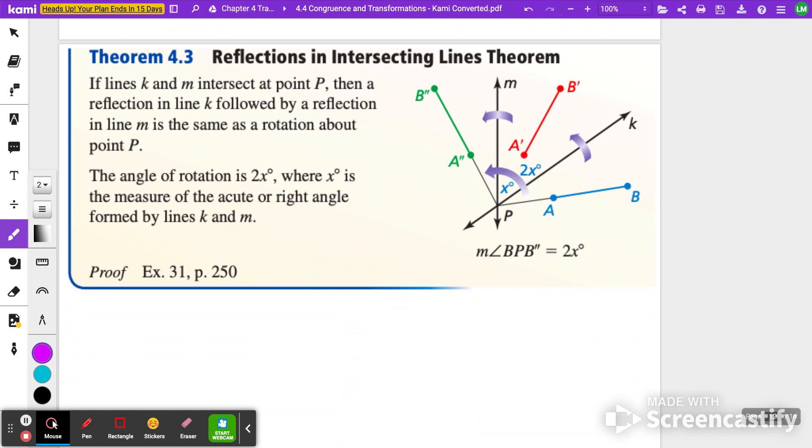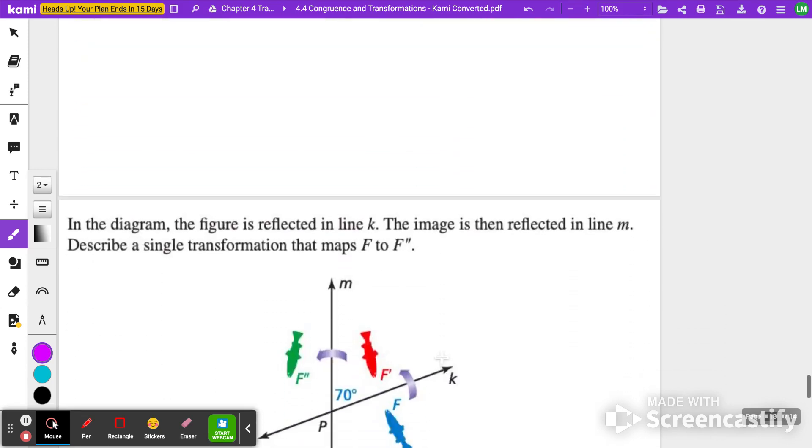The last theorem we're going to talk about, and then we'll discuss how we can find an answer for the last example, is theorem 4.3 reflections and intersecting lines theorem. If lines K and M intersect at point P, then a reflection in line K followed by a reflection in line M is the same as a rotation about point P. So that just means when you reflect over K and you reflect over M, we're just rotating about this point right here. The angle of rotation would be two X where X is the measure of the acute or right angle formed by lines K and M. So it's almost like between the lines K and M, that's the distance. And we're just trying to figure out the root of your rotation. You're just doubling it or timesing it by two.